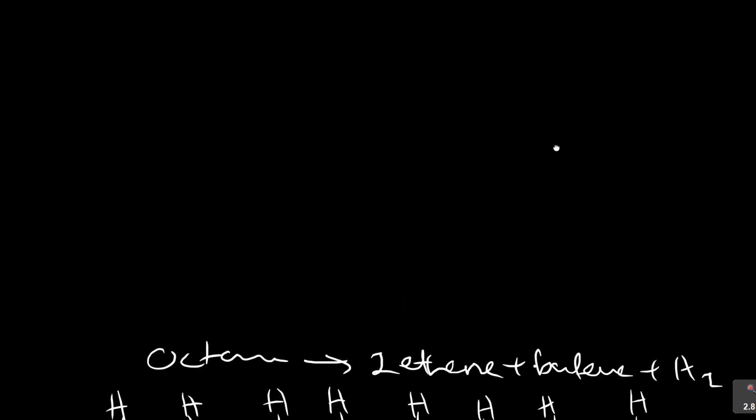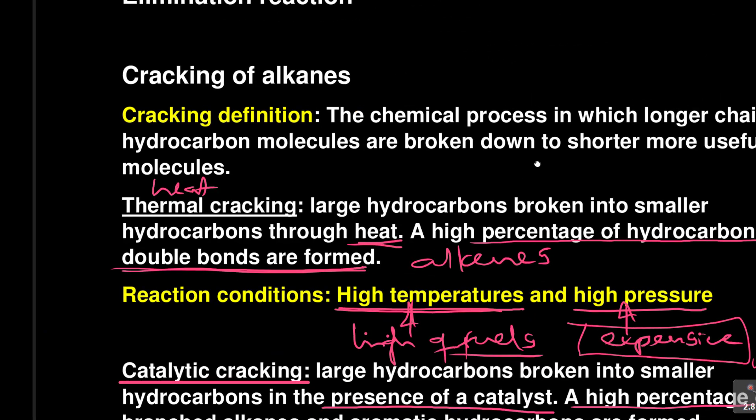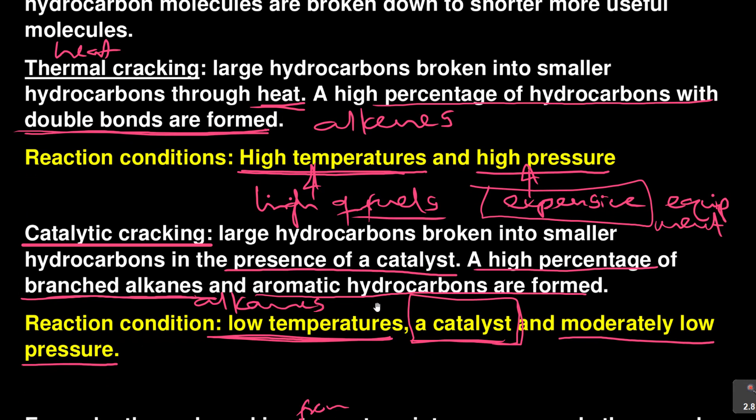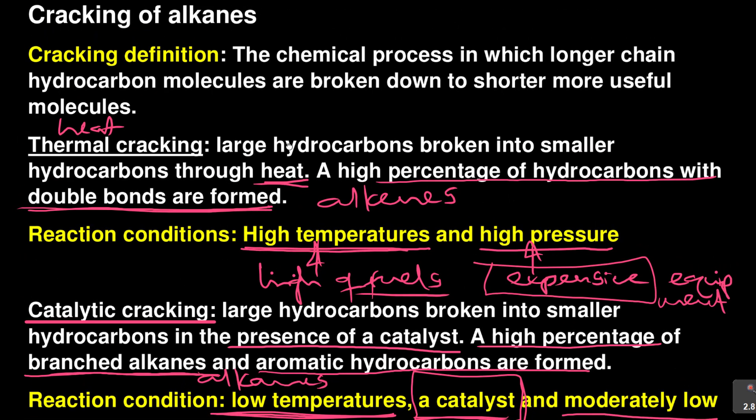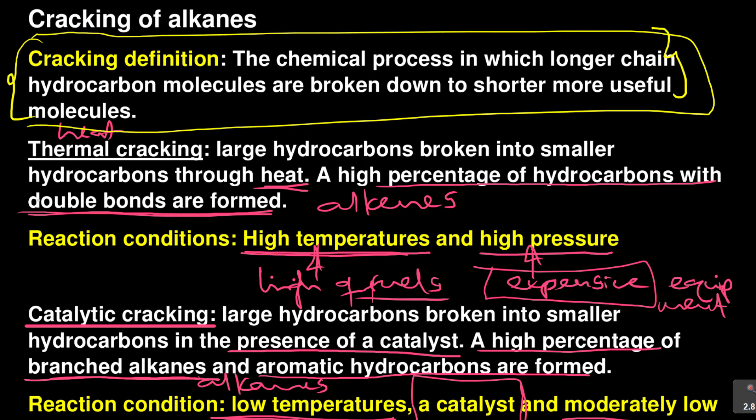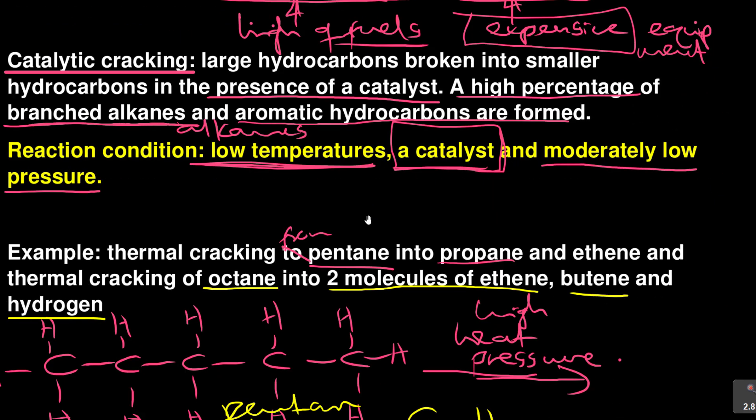We have done what we mean by cracking. Don't forget: there are two types of cracking. There is thermal cracking where you use heat and high pressure. There is catalytic cracking where you use low temperature, moderately low pressure, and a catalyst. In both areas when we are cracking, it is a chemical process in which longer chain hydrocarbon molecules are broken down into shorter, more useful molecules. This definition is very important.